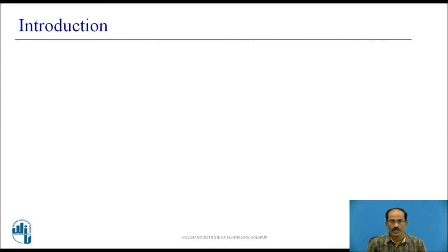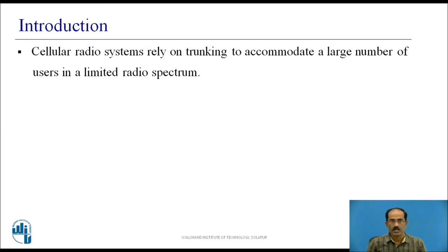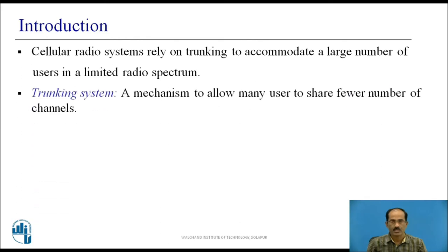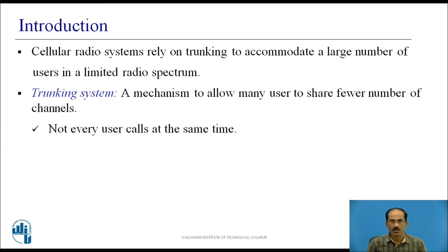To begin with the definition of Trunking System: cellular radio systems rely on trunking to accommodate a large number of users in a limited radio spectrum. Trunking allows a large number of users to share a relatively small number of channels in a cell by providing access to each user on demand from a pool of available channels, assuming not every user calls at the same time.